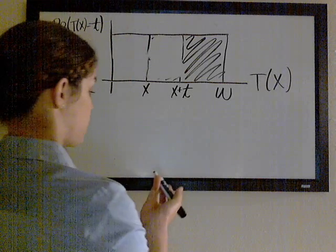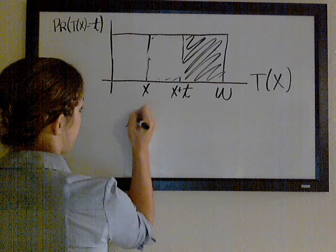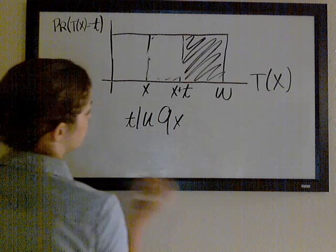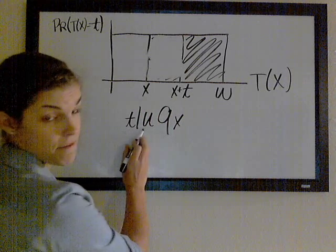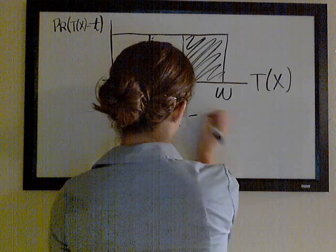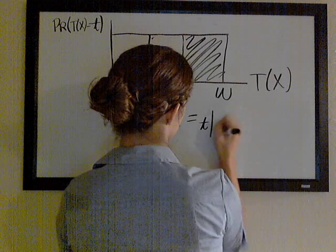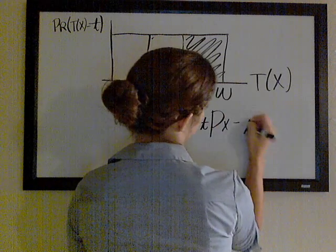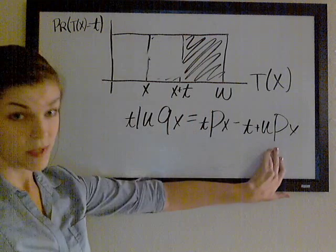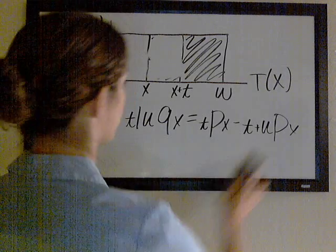One thing that might be good to try: you should be able to reason out in the same way the probability that an x-year-old lives t years and then fails to live u more years — that's t|u qx. You already know this is the probability that you live t years but not t plus u years, so you can figure it out and check if you got it right.